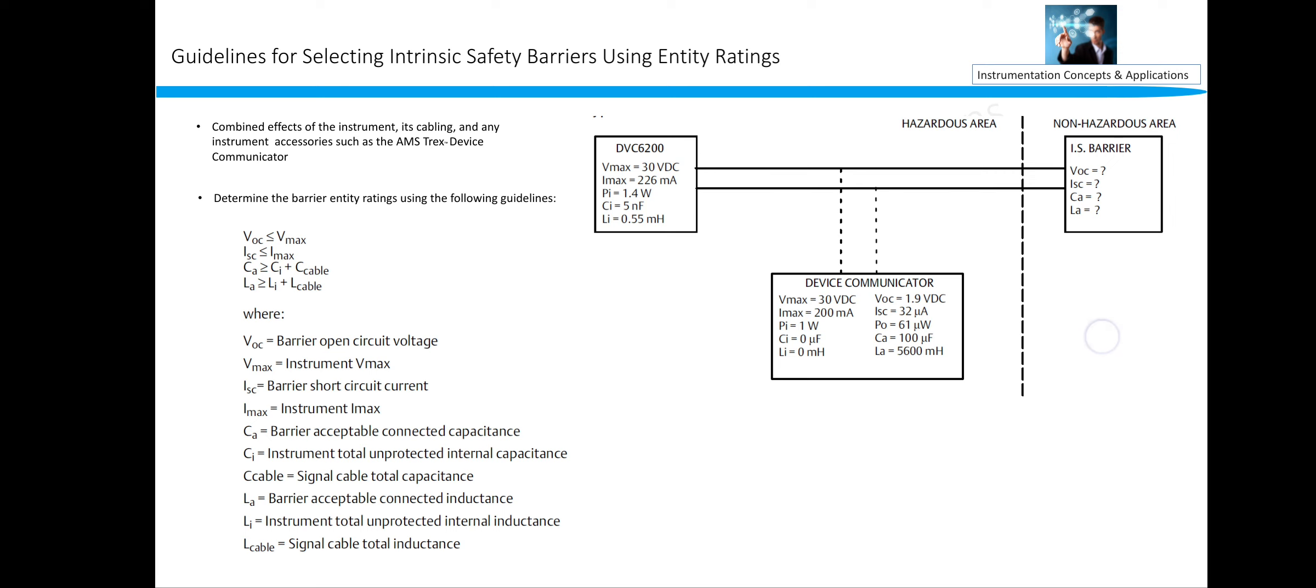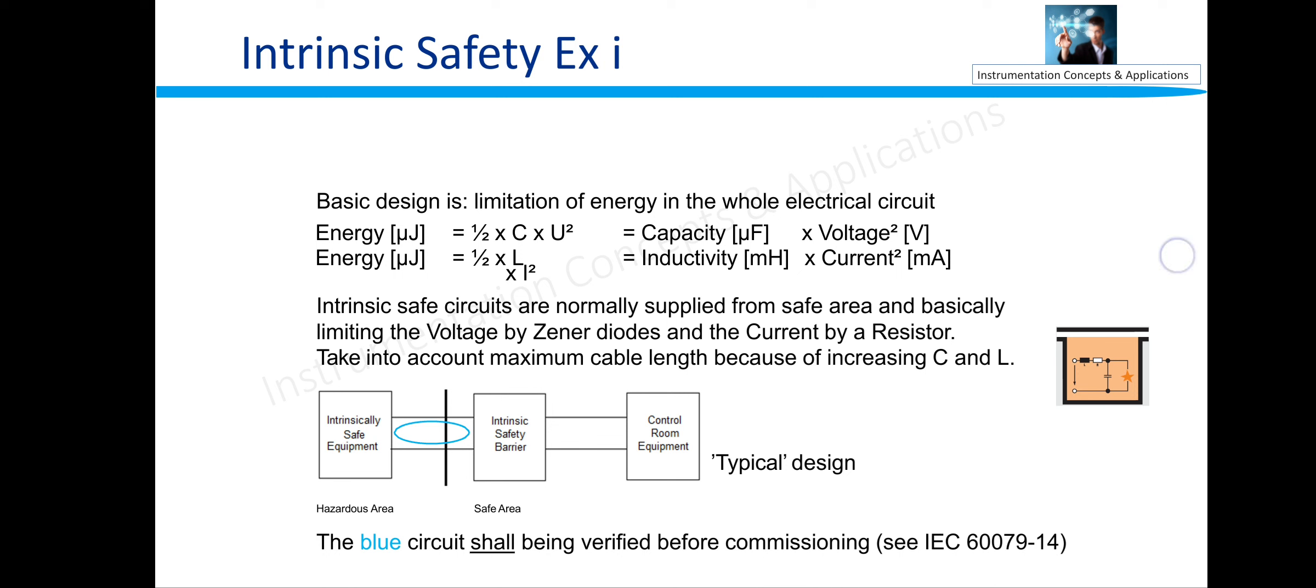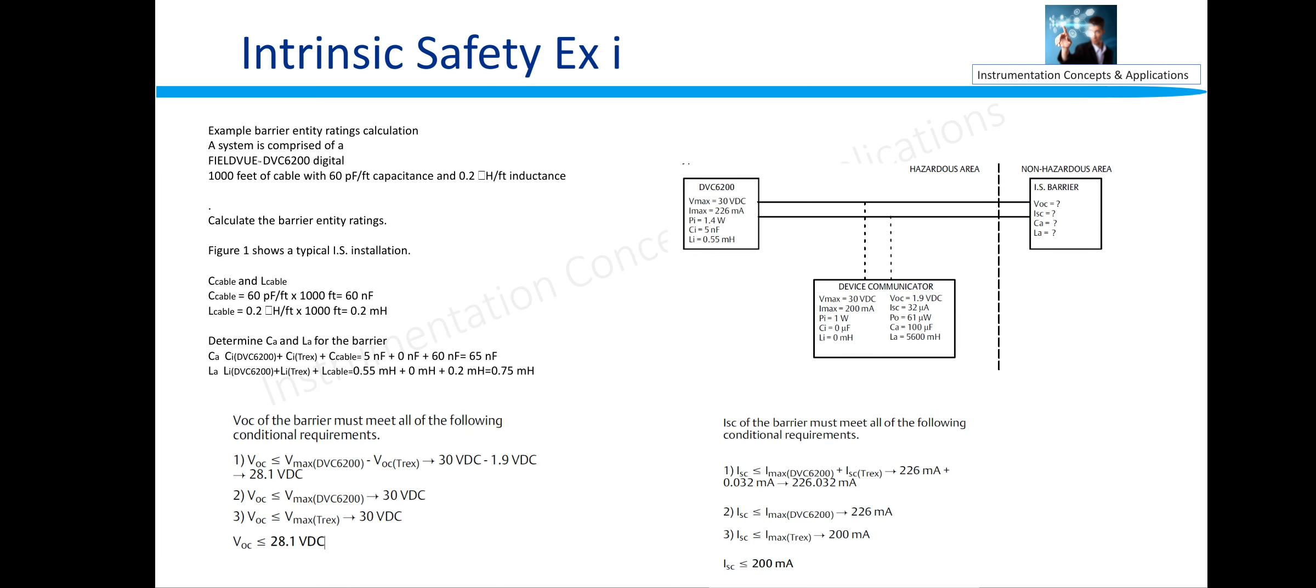Coming to the next slide, this is one example. Field valve DVC 6200 digital positioner. We used 1000 feet of cable with 60 picofarad per feet capacitance and 0.2 inductance per feet. Calculate the barrier entity ratings. How we are going to calculate it? C cable is 60 picofarad into 1000, that is 60 nanofarad, and L cable is 0.2 microhenry into 1000 feet, that is 0.2 millihenry.